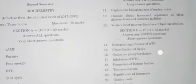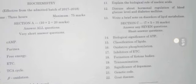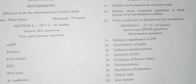And next, you can see here long answer questions: explain biological role of nucleic acid. Actually nucleic acid biological role is repeated. Biological significance of ATP, classification of lipids, oxidative phosphorylation, inhibitors of ETC (electron transport chain), formation of ketone bodies, transimmunation, significance of dopamine, genetic code, and gout diseases.